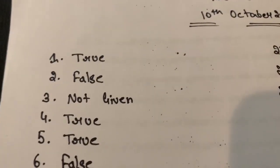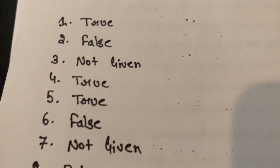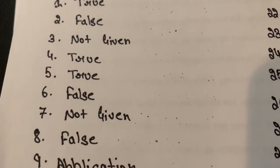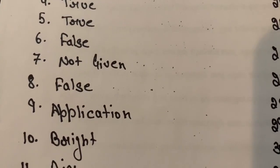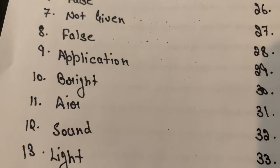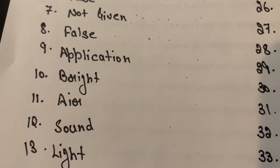First was True, second was False, third was Not Given, fourth was True, fifth was True, sixth was False, seventh was Not Given, eighth was False, ninth was Application, tenth was Bright, eleventh was Air, twelfth was Sound, thirteenth was Light.